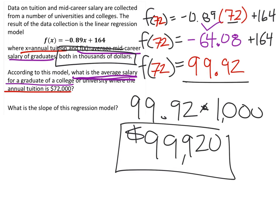The final part of this problem is just finding the slope of this regression model, which is right here. It's the coefficient of X, which is also shown in the equation there. So it's just a negative 0.89. Since that's also in thousands, you could say that it's a negative 890.